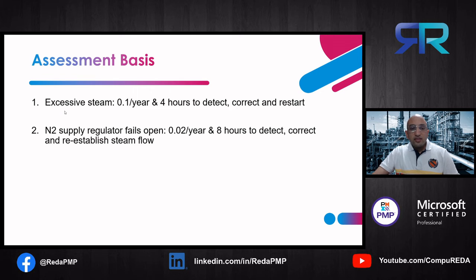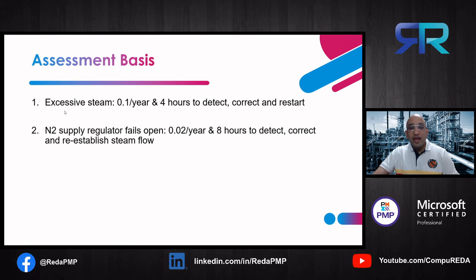Let's set the assessment basis. We assume the excessive steam event has a frequency of 0.1 per year and four hours to detect, correct, and restore. The nitrogen supply regulator failing open has a frequency of 0.02 per year and eight hours to detect, correct, and re-establish normal operation.